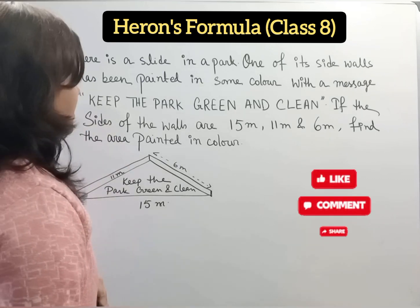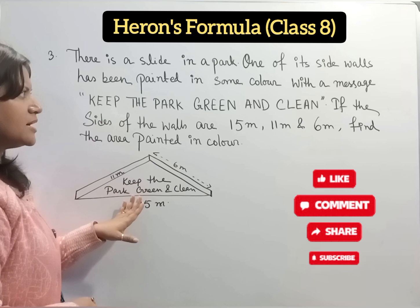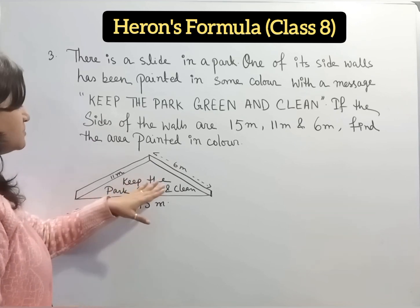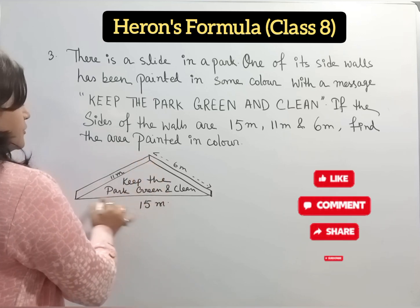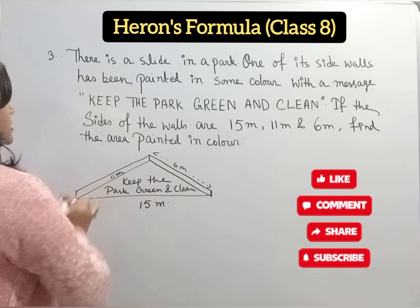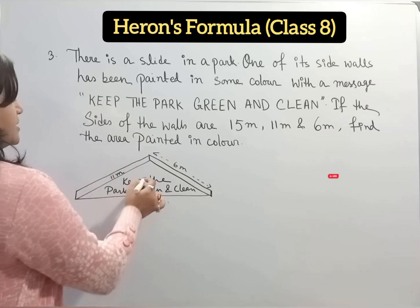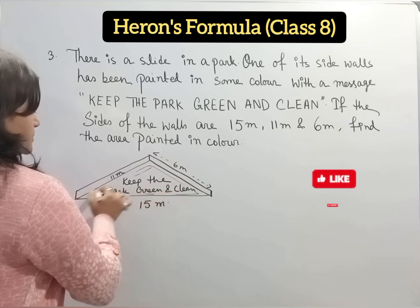There is a slide in a park. One of its side walls has been painted in some color with a message keep the park green and clean. If the sides of this wall are 15 meter, 6 meter and 11 meter, then find out the painted area. We have to find out the area of this section.